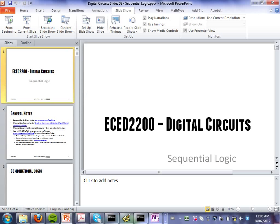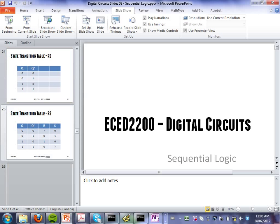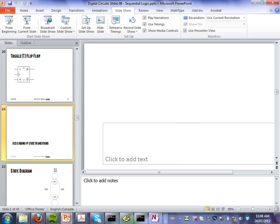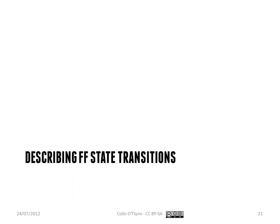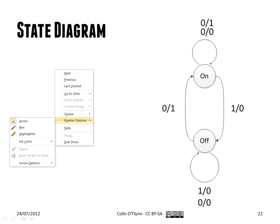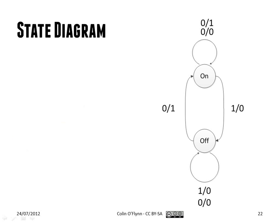Last class, we talked about some additional aspects of sequential circuits. The first thing we brought out was this idea of a state transition diagram, or state diagram, which just shows if you're given certain states, how you can move between those states.